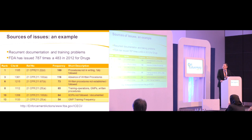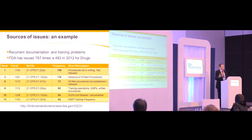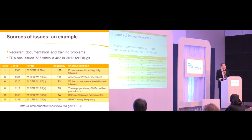Looking at sources of issues: from the FDA homepage for 2012 drug manufacturing, the FDA issued 787 Form 483s. In the first 15 ranks alone, six instances mention procedures not in writing, not fully followed, absence of written procedures, training operations, SOPs not followed, and GMP training frequency. Such issues lead to observations, which can prime problems in companies, leading to product shortage and stock out — ultimately touching patients.